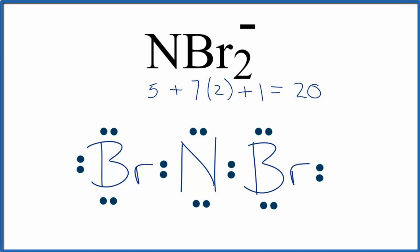So this is the Lewis structure for NBr2 minus. We should put brackets around it and put a negative sign outside since it is an ion.